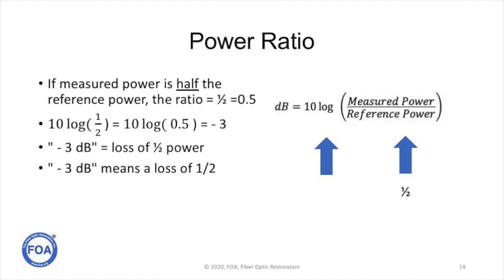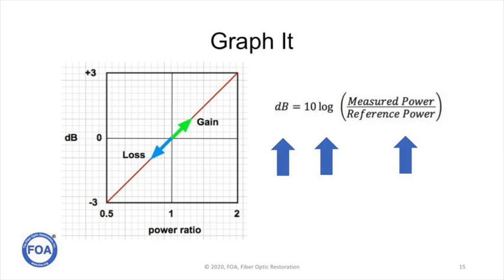The way logarithms work is that if the ratio is larger than 1, the logarithm is positive. If the ratio is smaller than 1, the logarithm is negative. And that's where the gain and loss become positive and negative.